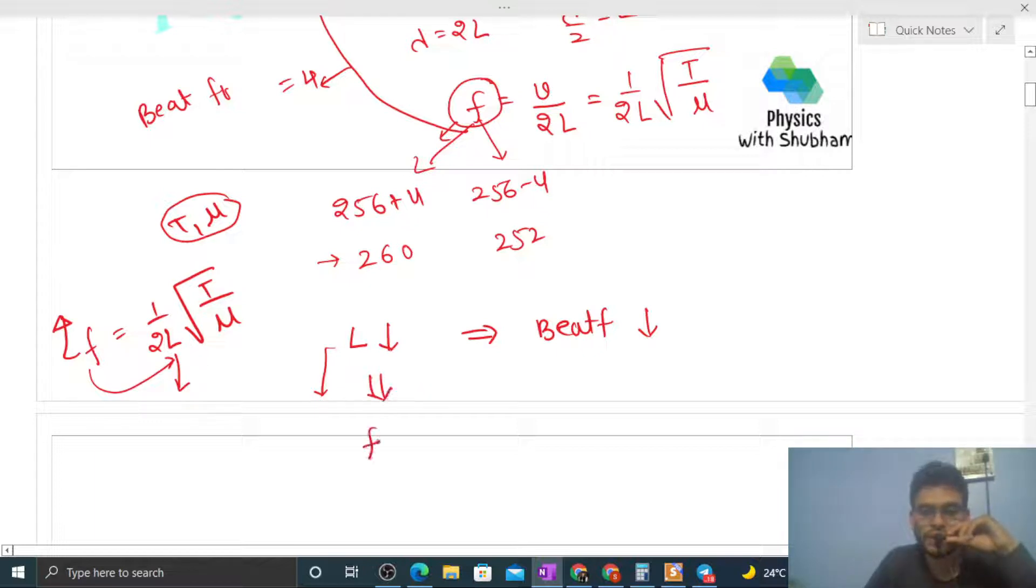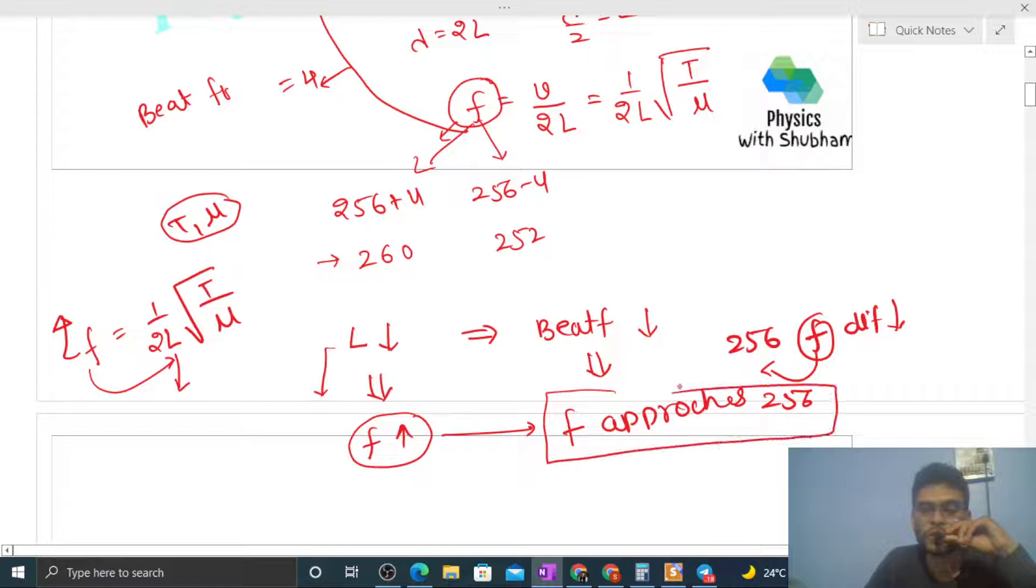So we can say f increases. And what does beat frequency decreasing mean? It means the difference between 256 and f decreases. It means f approaches 256.